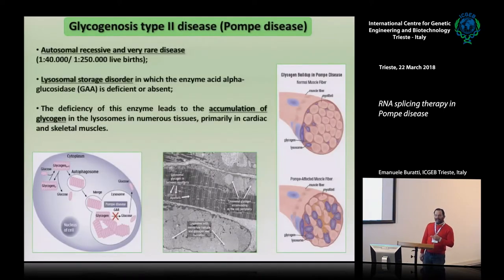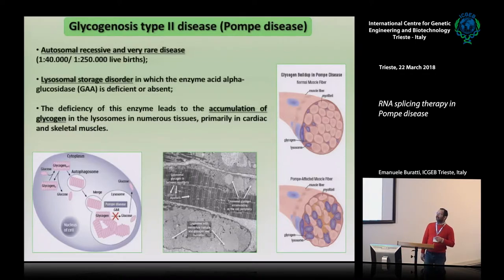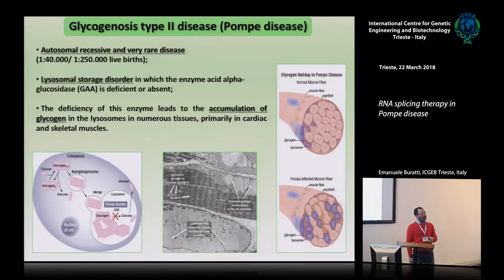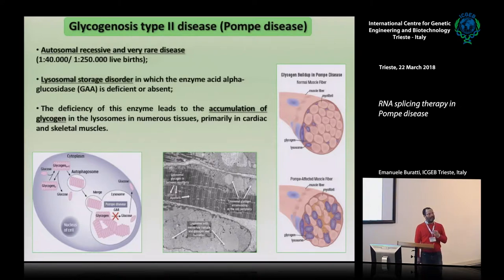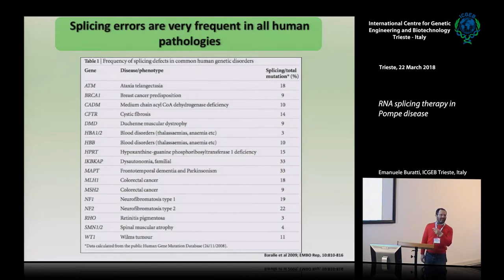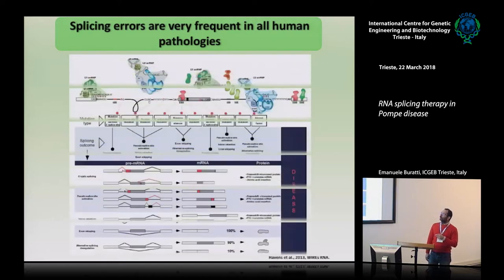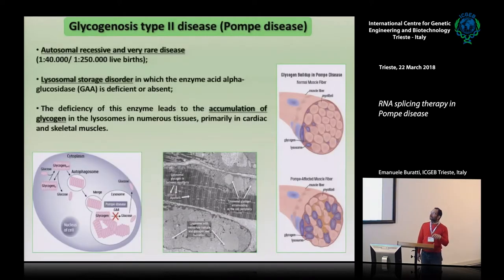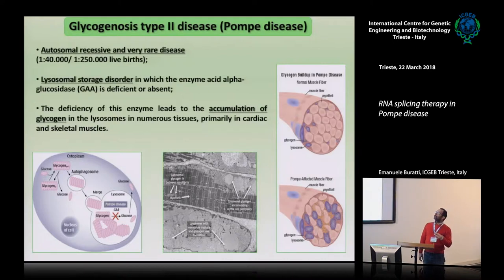In Pompe disease, for reasons I'll show you later, splicing mutations are very common. Before going to the splicing mutations, let me give you a brief introduction to Pompe disease and why we decided to choose this example out of thousands to try a splicing therapy. Pompe disease is basically a problem at the level of production of the enzyme acid alpha-glucosidase. It is a lysosomal storage disorder.